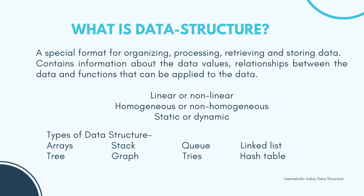Data structures are often classified by their characteristics. Let's see them one by one. First is linear or non-linear — this characteristic describes whether the data items are arranged in a chronological sequence such as with an array, or in an unordered sequence such as with a graph. The next is homogeneous or non-homogeneous — this describes whether all data items in a given repository are of the same type or of various types.